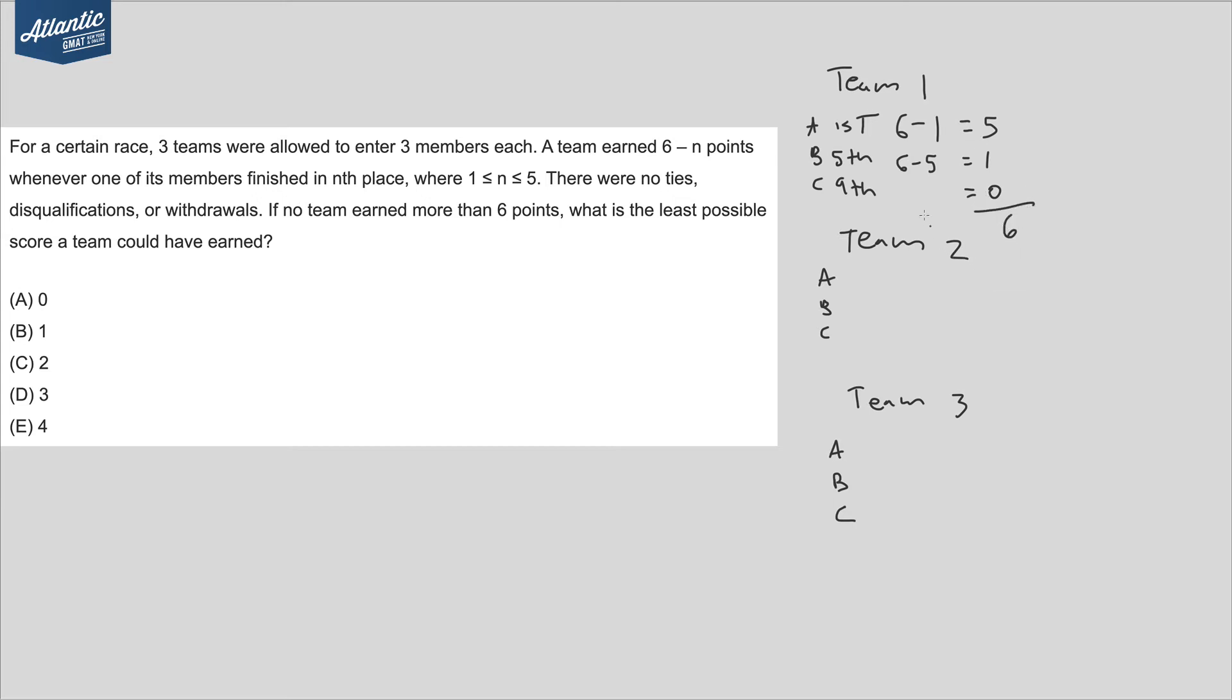Now let's try to do the same thing for Team 2. Let's give second place to the first guy on Team 2, that's four points. Then we've got two more points left to give, so fourth place will get that done for us. And then same thing, we don't want any more points or we can't have any more points, so let's give eighth place and that's zero.